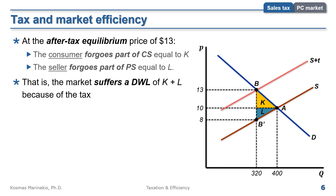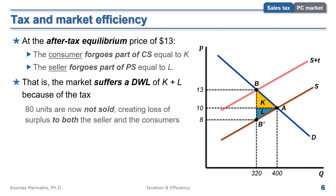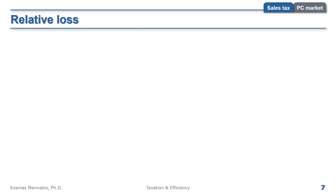It makes sense, because 80 units are now not sold, causing loss of surplus to both parties. In this graph it looks like the producer loses a little more surplus than the consumers — but is this always the case? Actually, it is not. Who will lose more surplus depends on the elasticity of the demand and the supply curve.